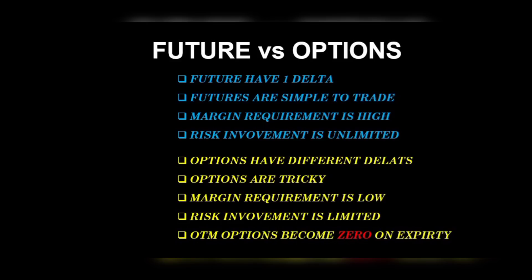Options and their deltas are different. ATM options have 0.5 delta. If you go in-the-money, delta will increase; if you go OTM, delta will decrease. These are the basics. There are also intrinsic value, theta decay, and vega — these are all option greeks. Options get a little tricky.